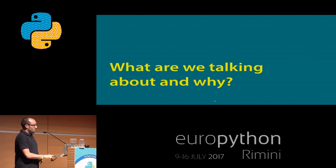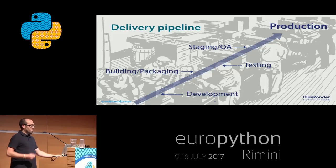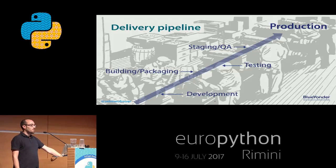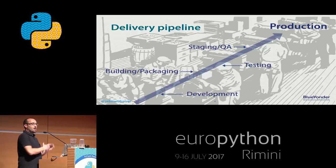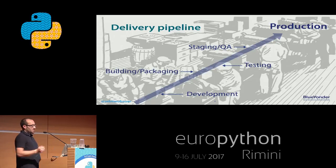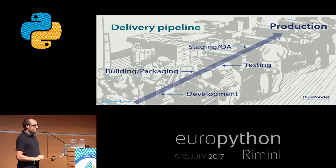So what are we talking about and why? Here I have a small picture just sketching out what we call a delivery pipeline. It means how do we bring things we develop into production, which means we deliver something to our customers. There are some stages: development, building and packaging, testing, staging and QA, and then in the end it hits production.